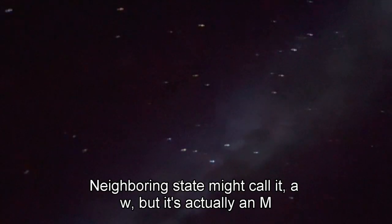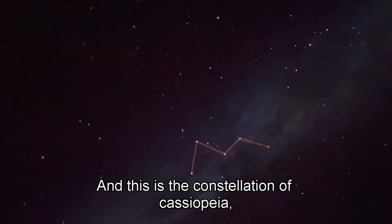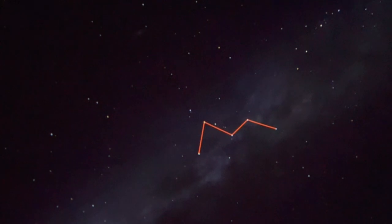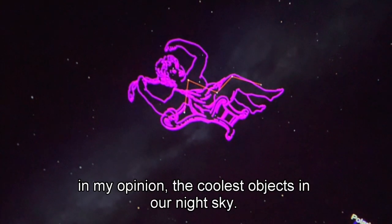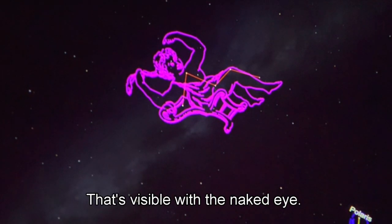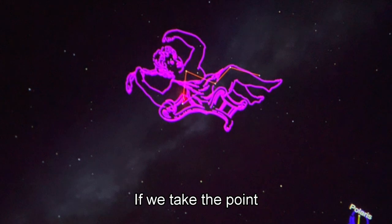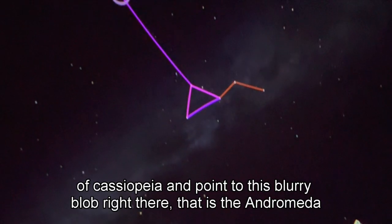A certain neighboring state might call it a W, but it's actually an M. This is the constellation of Cassiopeia. Cassiopeia we can use to find one of, in my opinion, the coolest objects in our night sky that's visible with the naked eye. If we take the point of Cassiopeia and point to this blurry blob right there, that is the Andromeda galaxy.